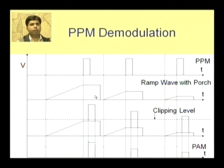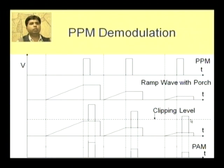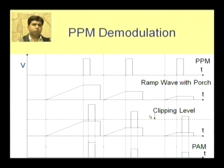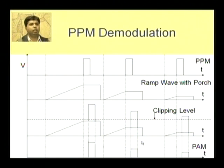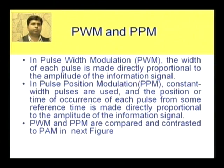The rest of the procedure is the same. Once the ramp wave with porch has been generated, we add a constant amplitude and constant width pulse to the ramp. After that we apply it to a clipper, which clips the signal below a particular level. The resultant is again a pulse amplitude modulated signal, which can be converted to the original modulating signal by using a holding circuit and low pass filter.